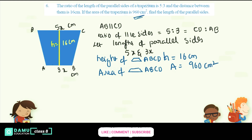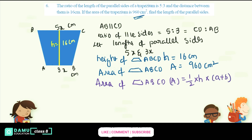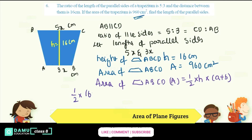What is the formula for the area of a trapezium? From the area, you can calculate the sides. Area of trapezium ABCDE equals half into height into (A plus B), that is half into 16 into (3x plus 5x) equals 960.